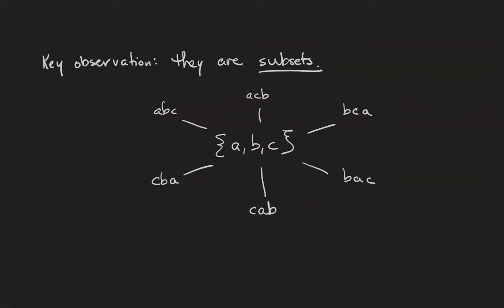A key observation is that an unordered sample without replacement is a subset. Notice that the six orderings shown here ABC, ACB, BCA, CBA, BAC, and CAB all correspond to the subset ABC once we take away their order.